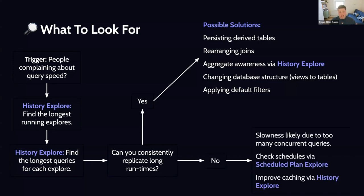There's another path: if run times for queries aren't consistent and you can't consistently replicate long run times, this may mean there's something transient at a point in time causing slow queries. You may want to see if there's a time of day where tons of schedules kick off, slowing down queries because so much volume is being put through Looker and the warehouse simultaneously. Or maybe there's a way to improve caching — your caching policy may not be optimized. You should go see what percentage of queries are hitting your cache and understand whether you can use data groups or other mechanisms to improve things there.